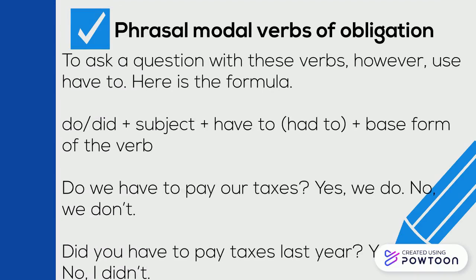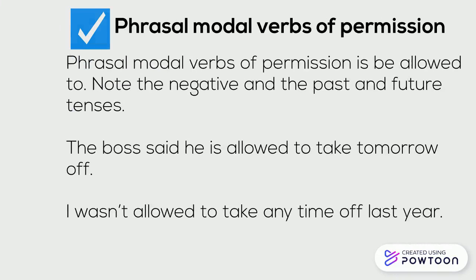To ask a question with this verb, use 'have to.' Here's the formula: Do or did, plus subject, plus have to, plus base form of the verb. Do we have to pay our taxes? Yes, we do, or no, we don't. Did you have to pay taxes last year? Yes, I did, or no, I didn't.